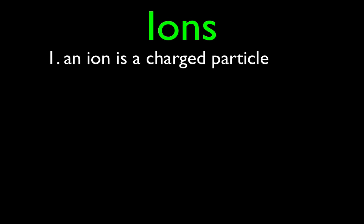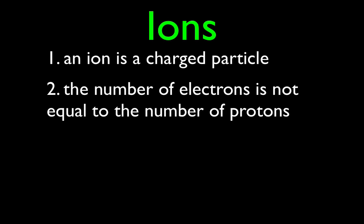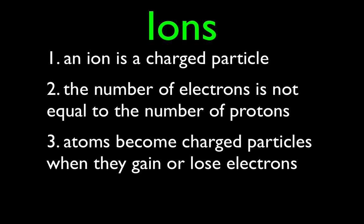We talked about the periodic table and atoms before. Now we're going to talk about the periodic table and ions. Atoms are neutral — they have no charge. An ion is a charged particle, a positive or a negative charge. It's charged because the number of electrons is not equal to the number of protons. Atoms become charged by gaining or losing electrons.